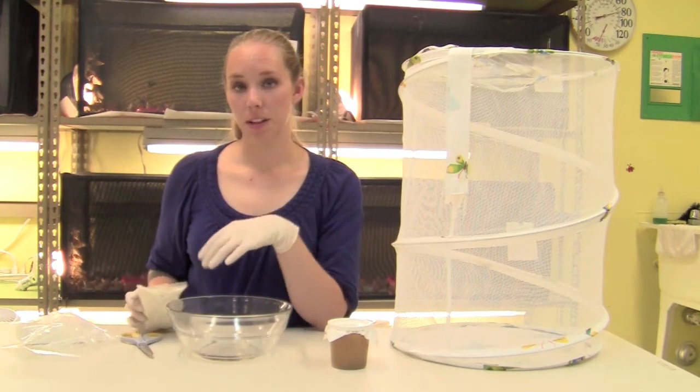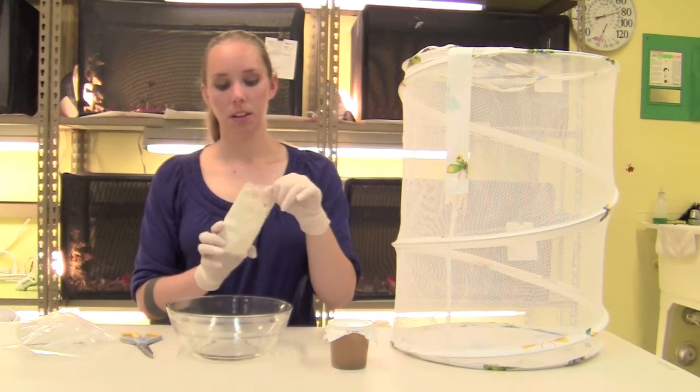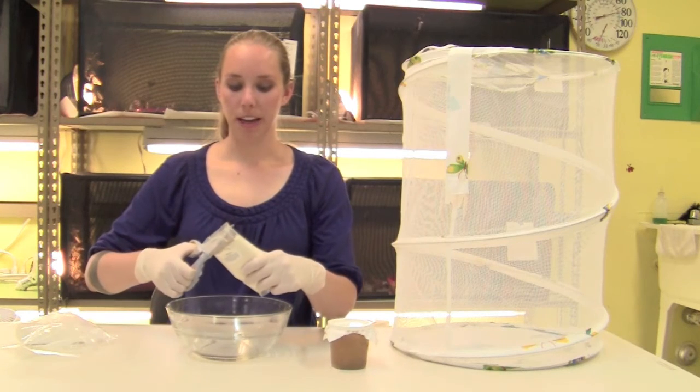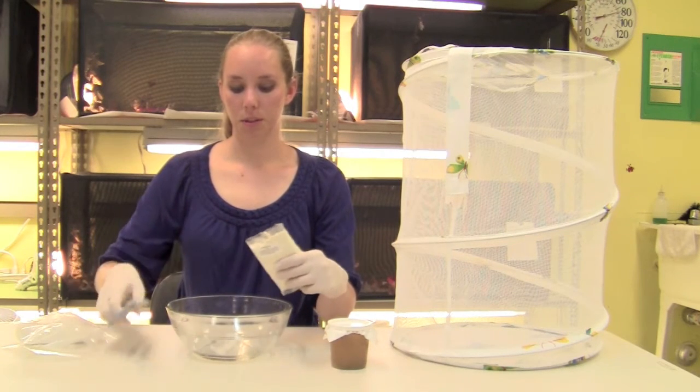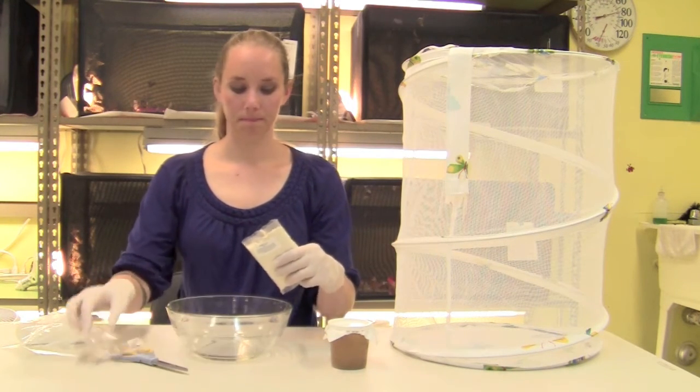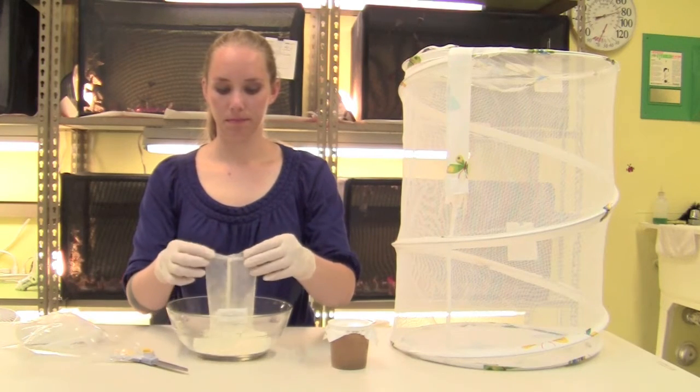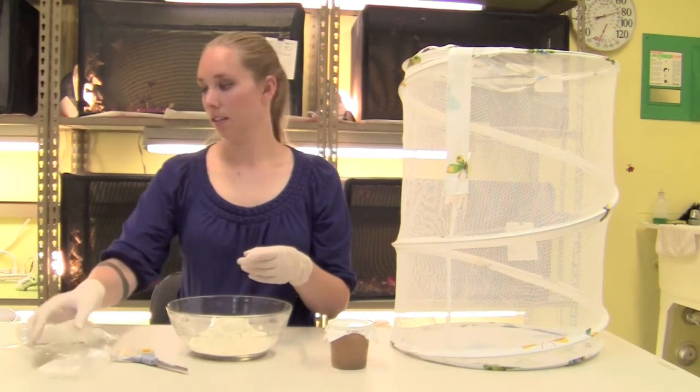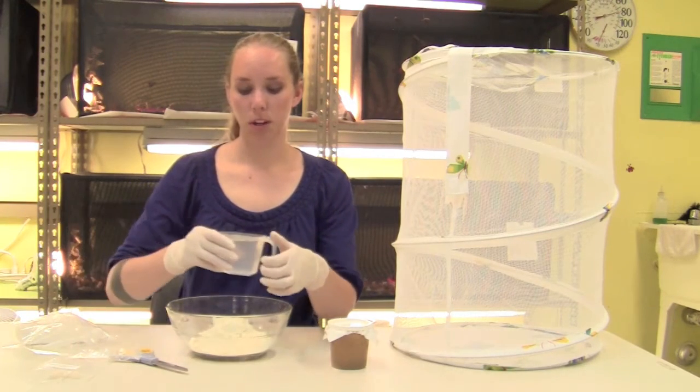When you're ready to transfer the larvae into the cups, you'll need to mix the food that we've sent with the kit. You can cut open the bag and pour the dry food into a bowl. Then add 1 1/4 cups of water.